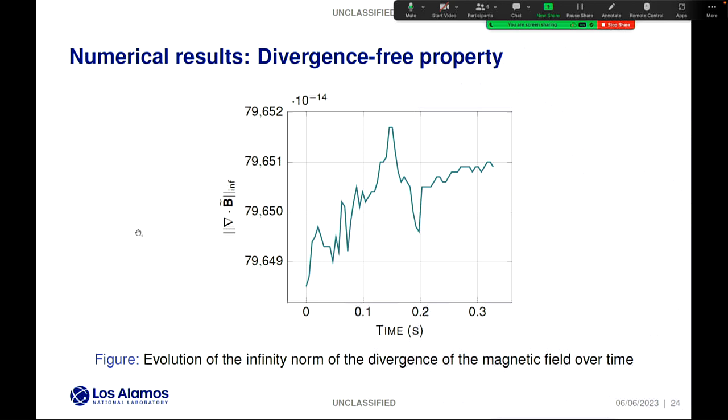The same simulation was used to investigate the divergence-free property of the magnetic field in the MFD solver. This graph is showing the evolution of the infinity norm of the divergence of the magnetic field over time. We can see that initially, the divergence of the magnetic field is not exactly zero, but it's rather close to the order of 10 to the power minus 10. But as time evolves, the divergence fluctuates by plus or minus 10 to the power minus 15, which confirms the divergence-free property I stated previously.